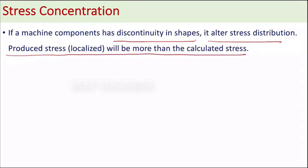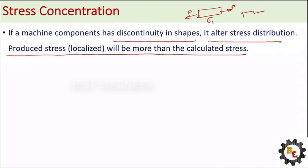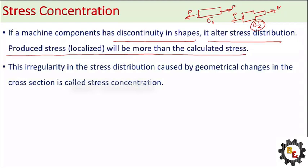Suppose this is a rod and we are applying a load. It produces stress sigma 1. Now suppose we change the cross-section and apply the same load. The stress distribution sigma 2 will be more than the average stress — the stress will be altered. The irregularity in stress distribution is caused by geometrical changes, which vary the stress distribution across the cross-section.